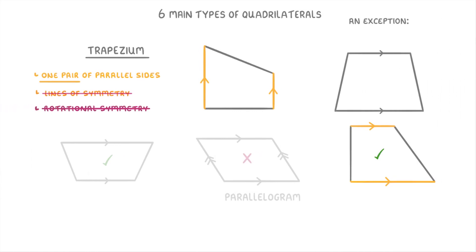There is one exception to this rule, which is a special type called an isosceles trapezium. In these, two of the non-parallel sides are the same length, so the shape has one line of symmetry. Just remember this as the one exception. Also worth noting that this is the UK definition of a trapezium — in other countries, trapezium can mean a slightly different thing.